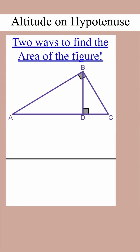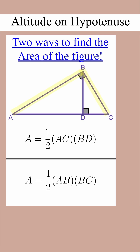We have two options to find the area of triangle ABC, both using one-half base times height. We could do one-half AC times BD, or we could do one-half AB times BC. Do whichever is easier for the problem you're doing.